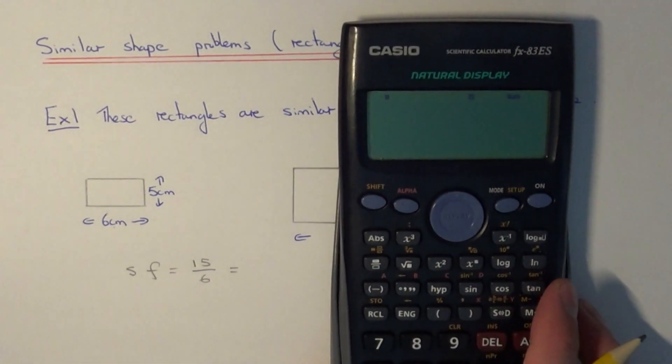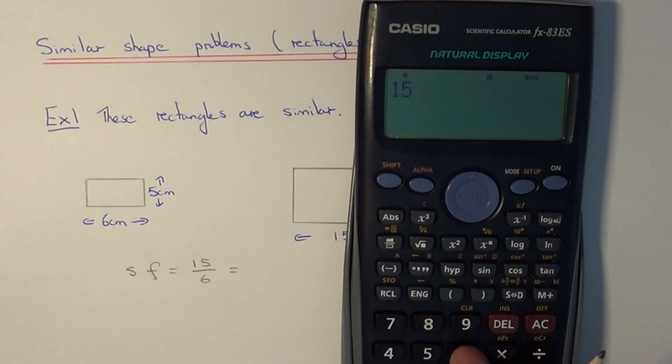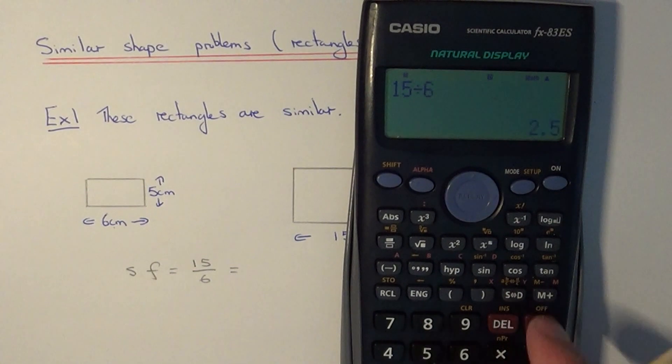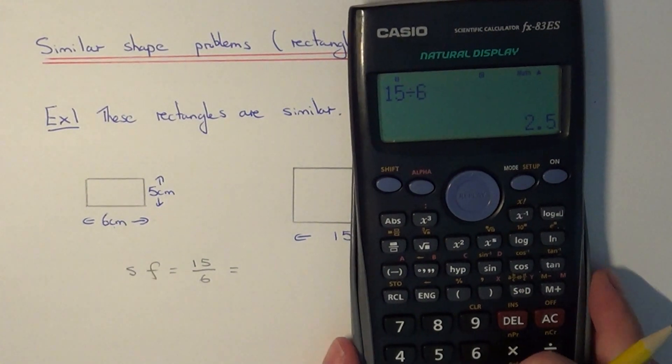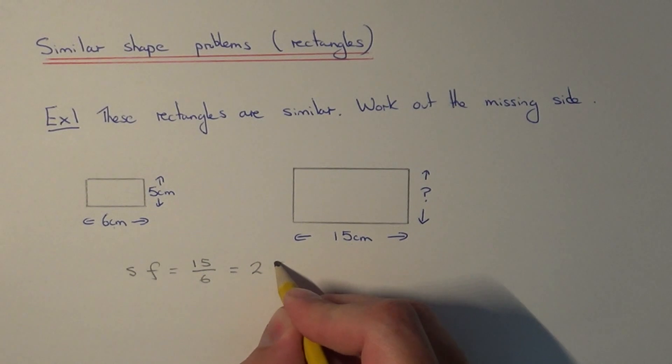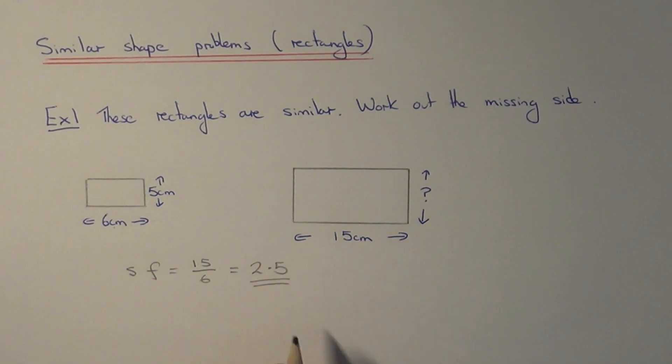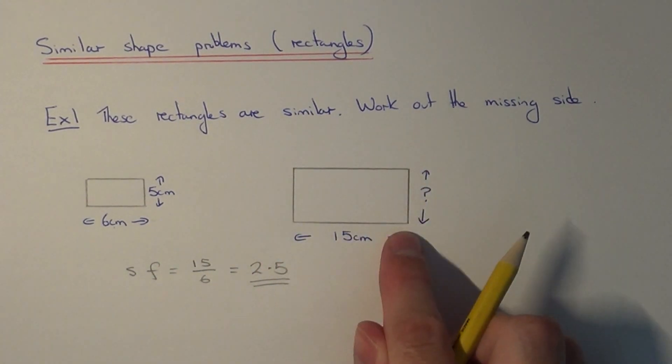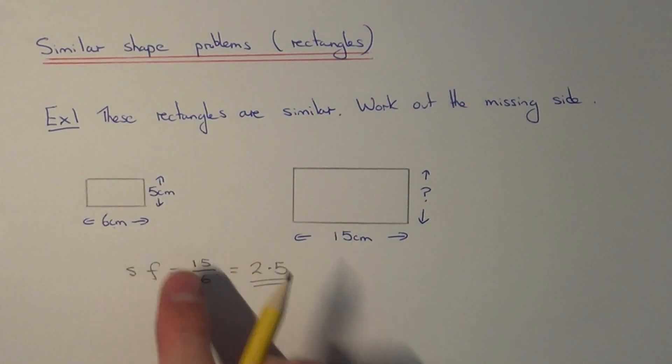So if you can't work that out in your head, use your calculator. That should give an answer of 2.5. So the sides of the larger rectangle are 2.5 times bigger than the sides on the smaller rectangle.